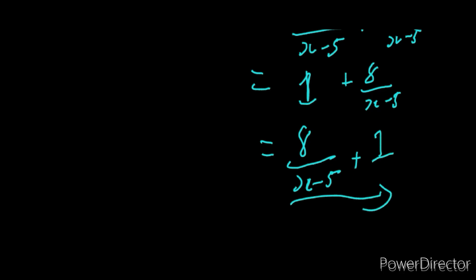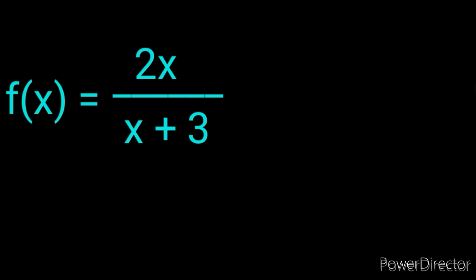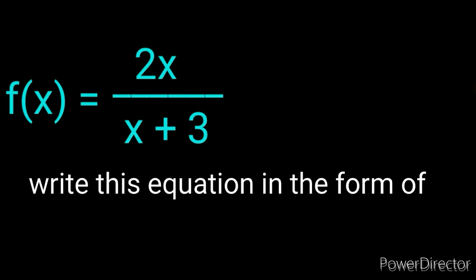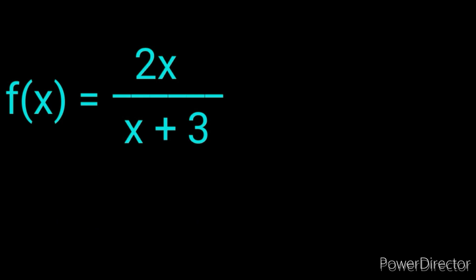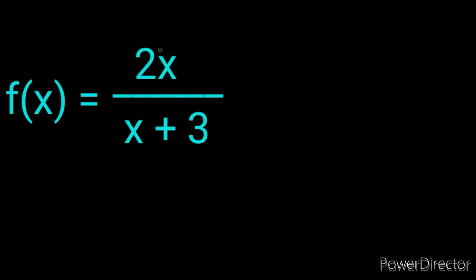Now let's go to the higher level. Here is another level. You're given this equation and asked to write it in the form of f(x) equals a over x minus p plus q. This is the next level because we have a coefficient of x. Whenever there is nothing in front of x, we know the coefficient is 1 — we call that level one. But whenever there is a different coefficient, this is the next level.